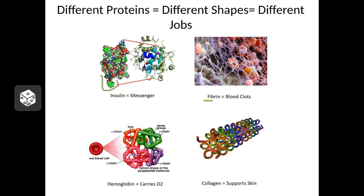Here we have fibrin. Fibrin is used during times of injury — when you cut yourself, for instance. It's shaped like long strings, and what it does is form an internal net across a cut. You can see that there are red blood cells trapped in this net. So it kind of stops the bleeding at a cut until the coagulants and other clotting factors can kick in and make a proper blood clot.